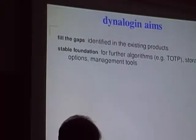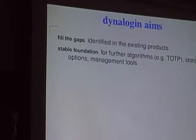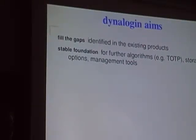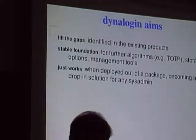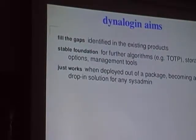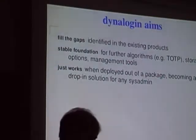DynaLogin aims to fill the gaps identified in those other existing products. It's intended to provide a stable foundation for further algorithms like time-based OTP. The existing solution is event-based — you press a button to get a new password — but time-based solutions revolve by themselves over time. The goal is something a sysadmin can drop in and expect it to provide a minimum level of security on their box or network.